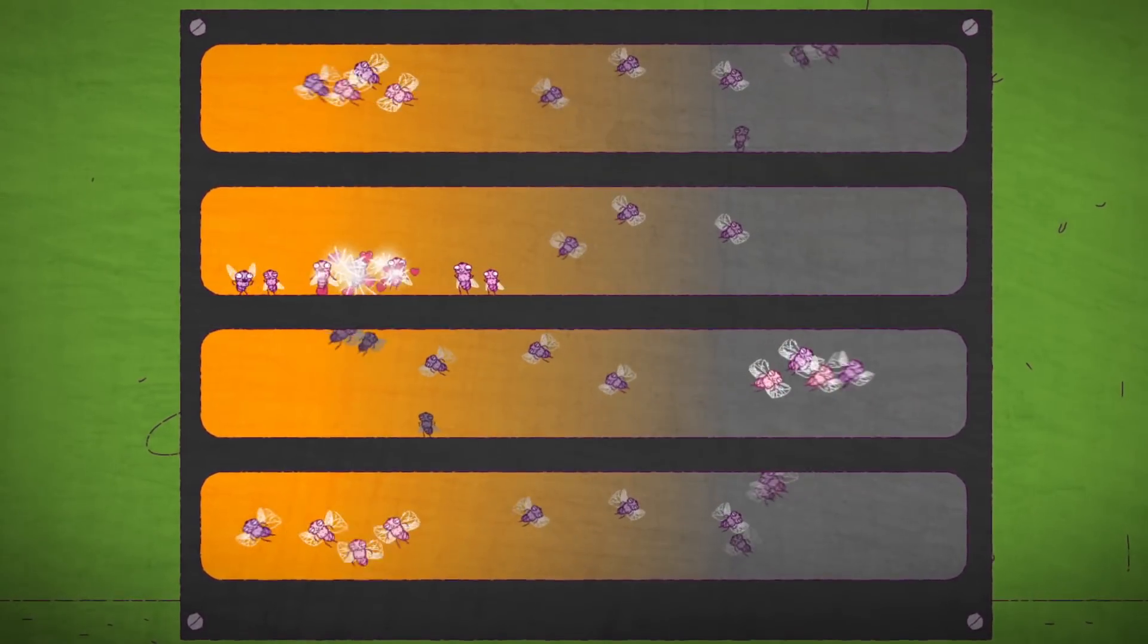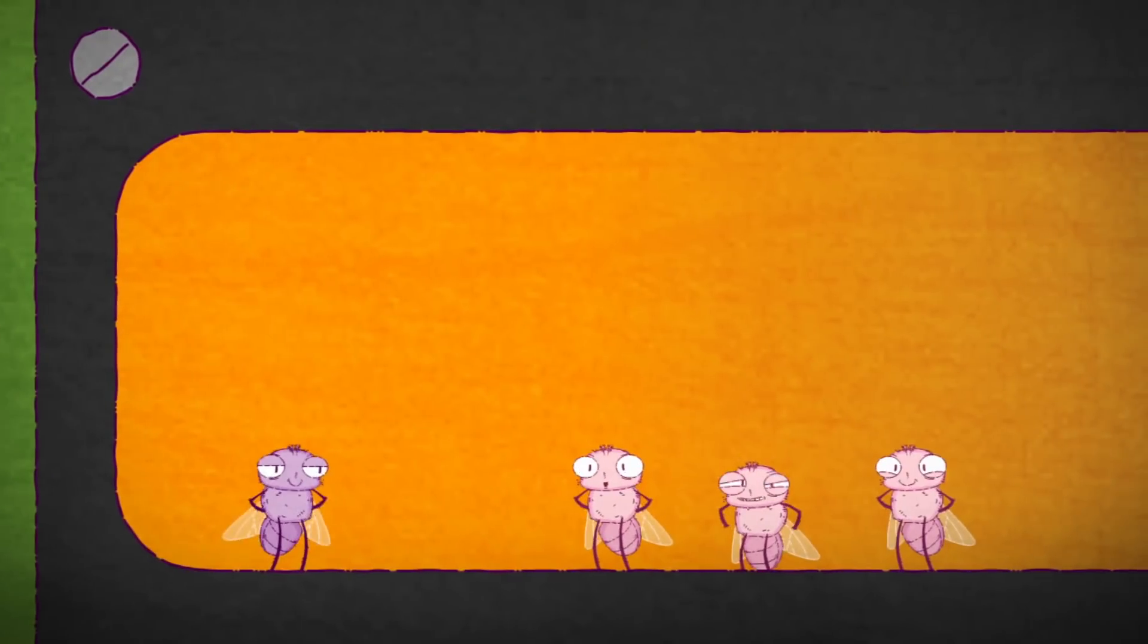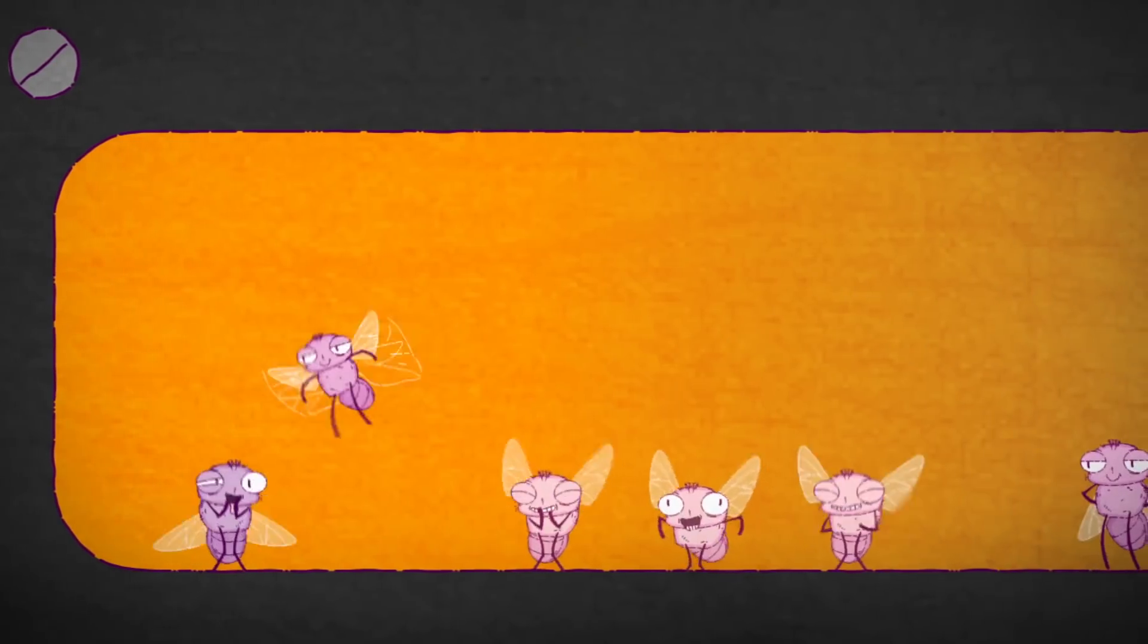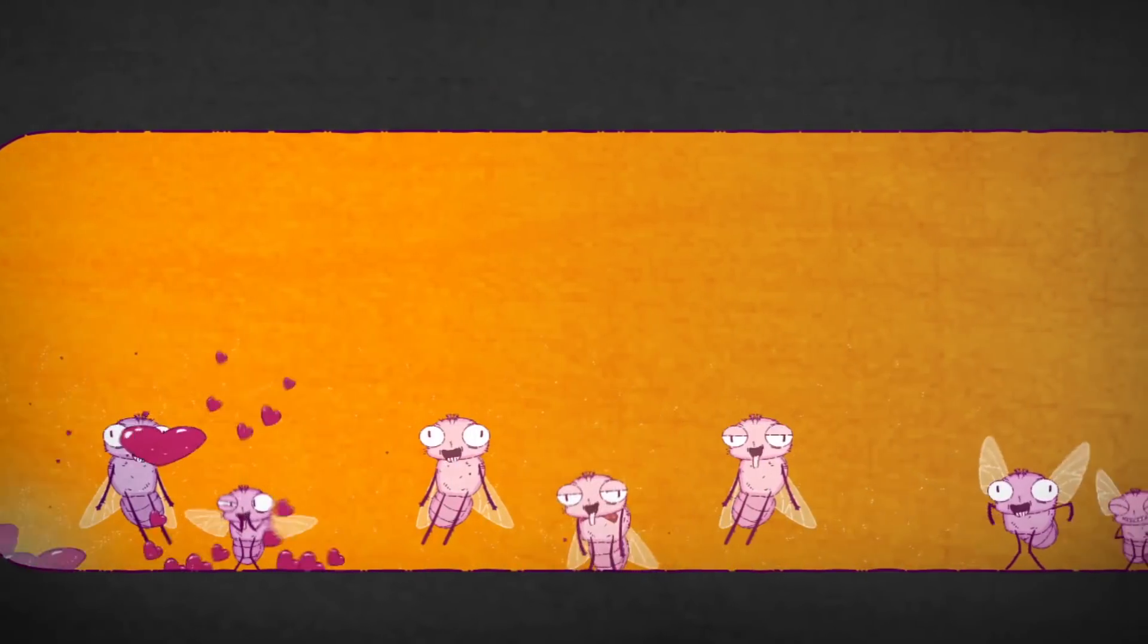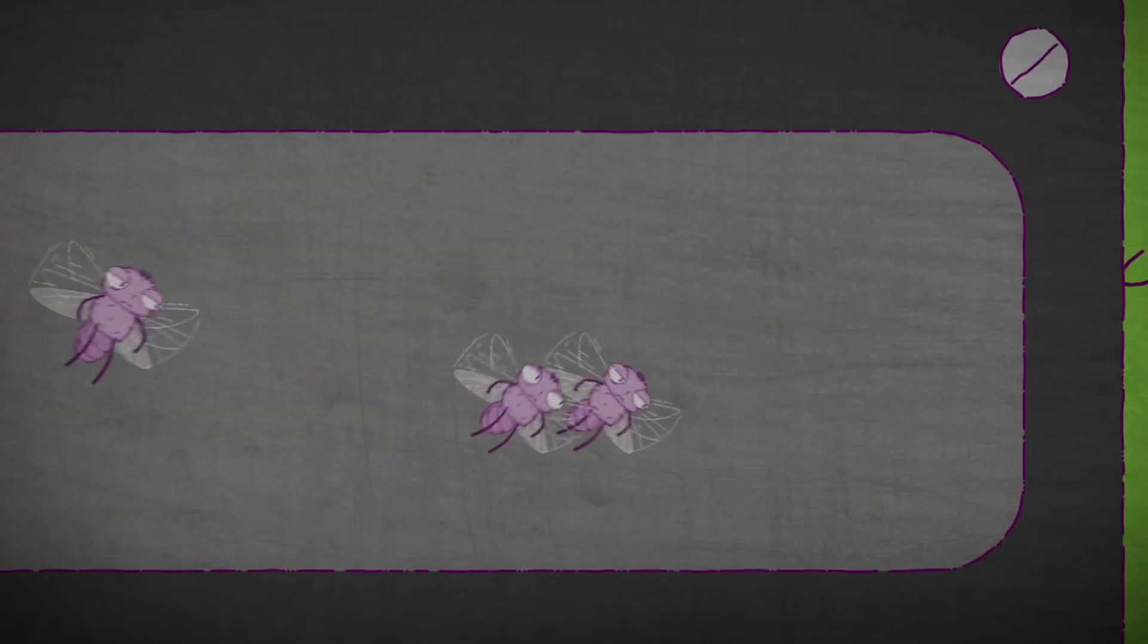First, we used a two-choice arena, where flies can choose between a red light zone that triggers optogenetic activation of corazonin neurons, or a dark zone.